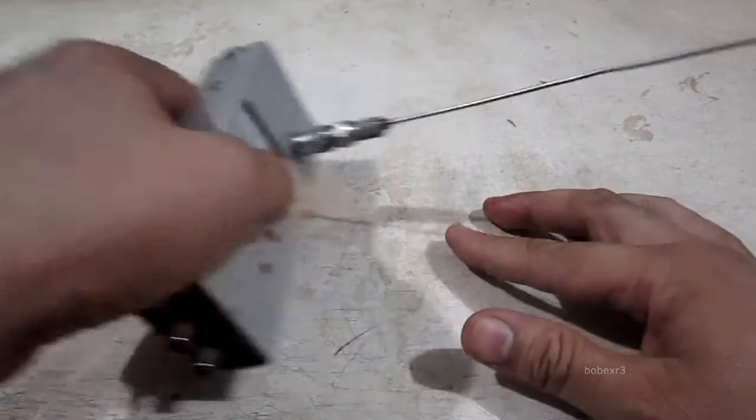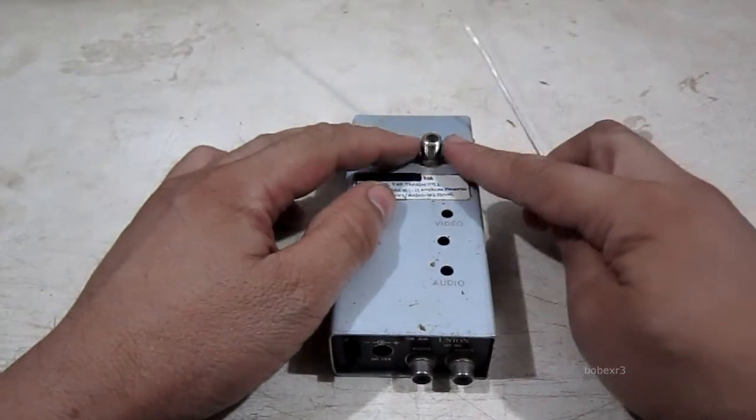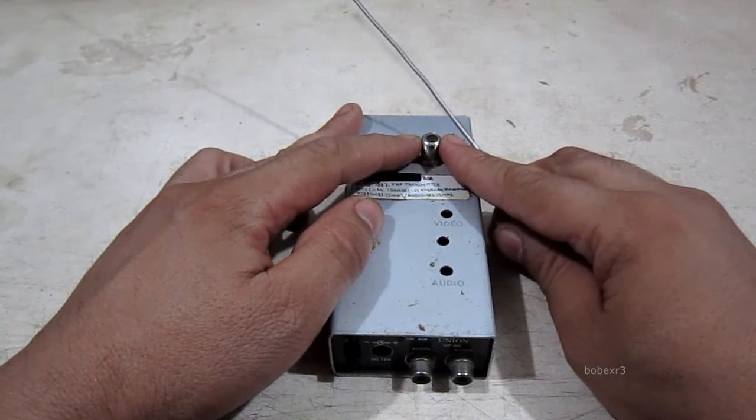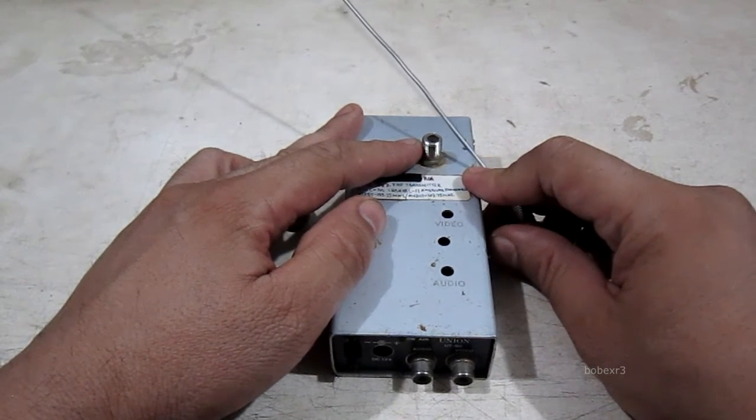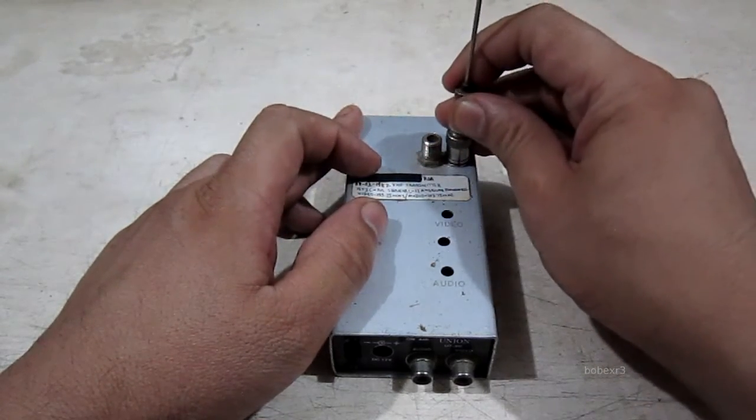This is the transmitting antenna and this is the connector. I already modded this connector, this is not the original. The original connector looks like a hole similar to this hole - we just insert the antenna into the hole.